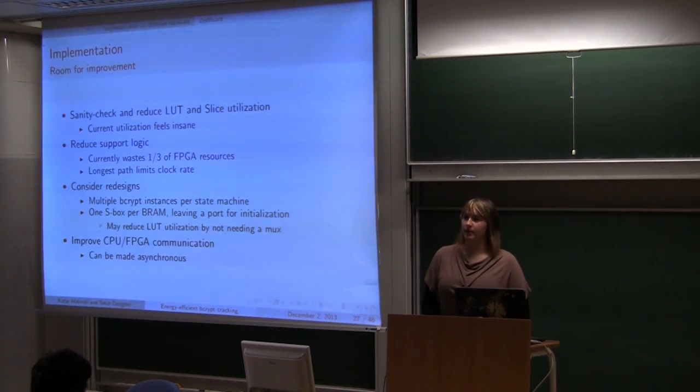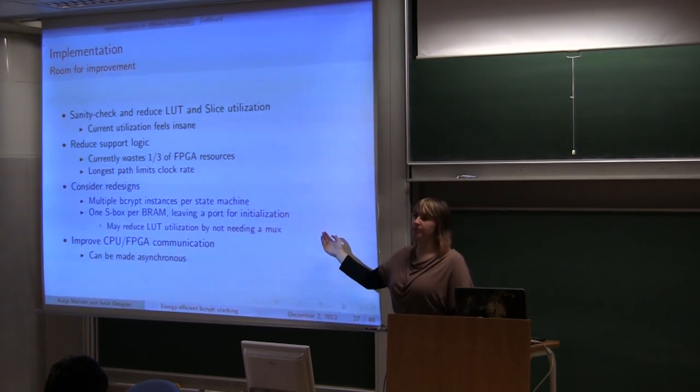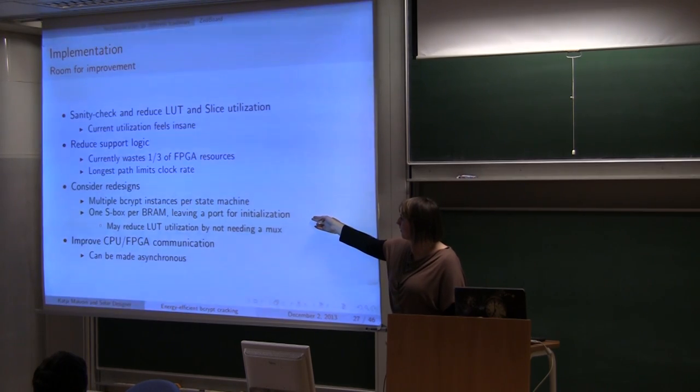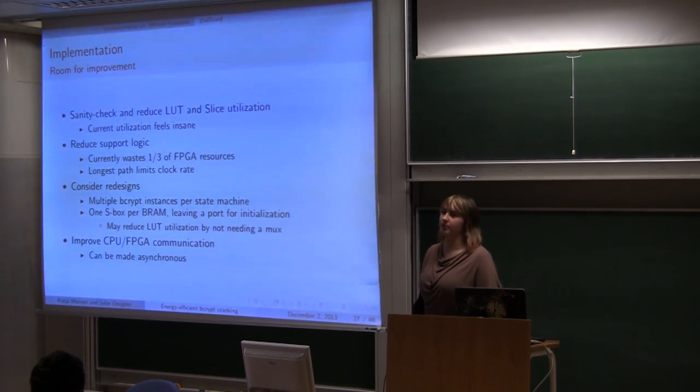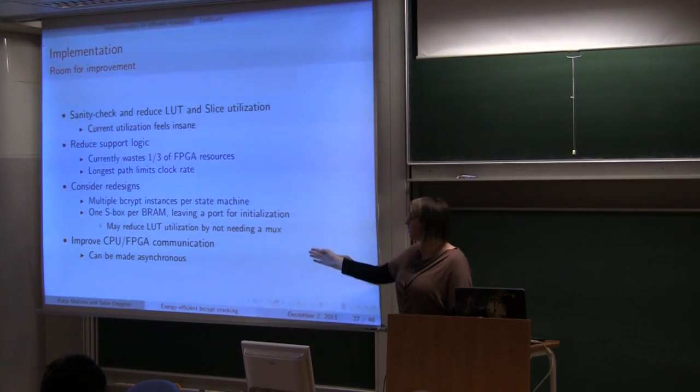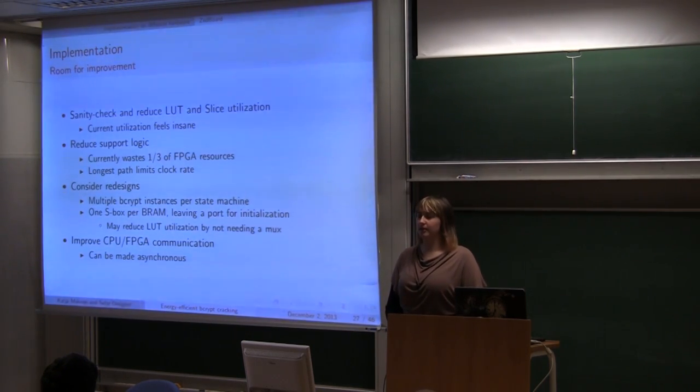We also need to consider some designs. At the moment there is only one finished state machine per core. We need to try interleaving more of them to use the logic better. So have two. And there is also, since we don't have problems with block RAM utilization, there is also opportunity that we can use only one S-box per BRAM. So that with one port we access data only when doing computation. And with the other port we access data when initializing the S-boxes and when reading the data. And also we need to improve communication because it determined the longest path. So it determined clock cycle, clock frequency, and it took away a third of the board.